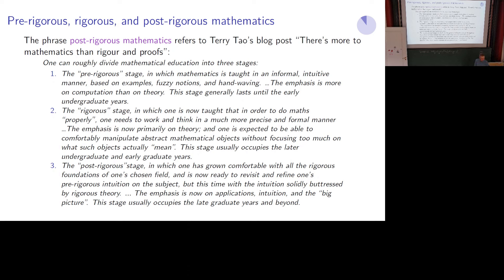For Terry, post-rigorous mathematics is really aspirational because it allows one to explore in a more intuitive, broad perspective. This is something he advocates trying to achieve, but it would be domain-specific — an expert mathematician would not be able to reason post-rigorously in all sorts of fields, but only in one specific domain of expertise.